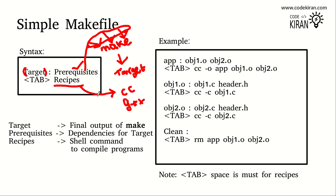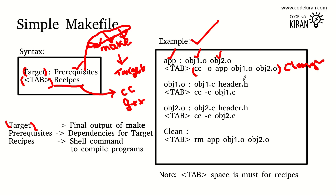When writing a recipe you must provide a tab space, otherwise it won't be treated as a recipe. To summarize: target is the final output of make, prerequisites are dependencies of the target, and recipes are the shell commands to compile programs. For example, a target named 'app' will generate a final product called 'app' in your build directory, with dependencies on object1.o and object2.o, and a recipe: cc -o app object1.o object2.o.